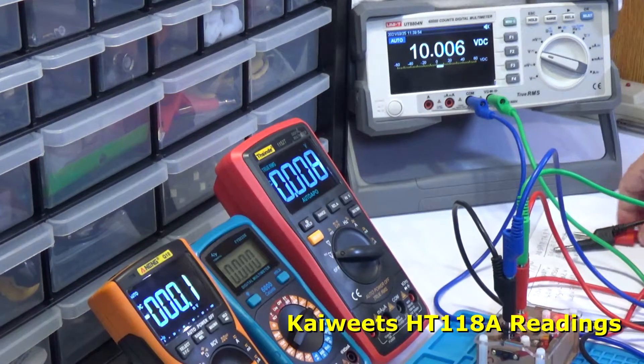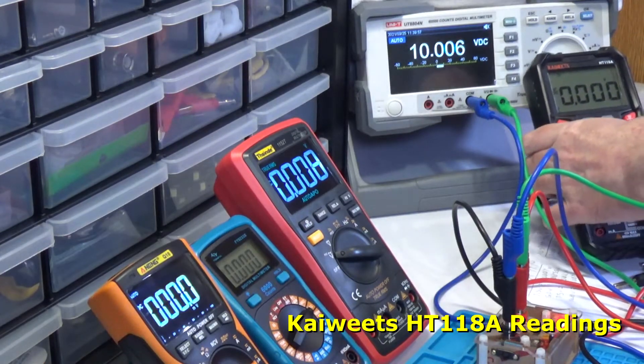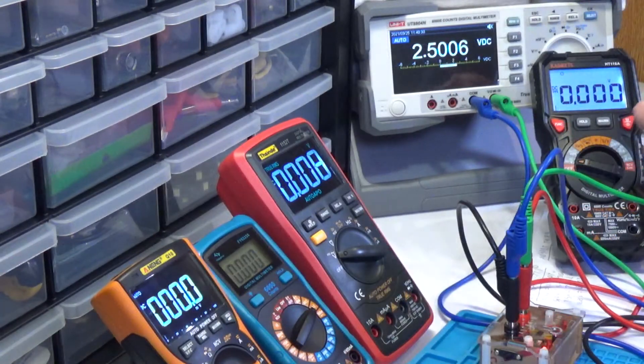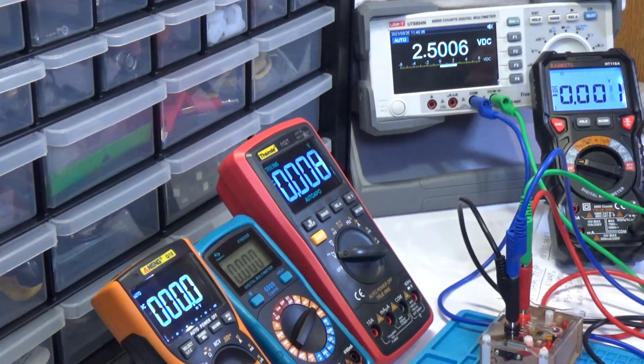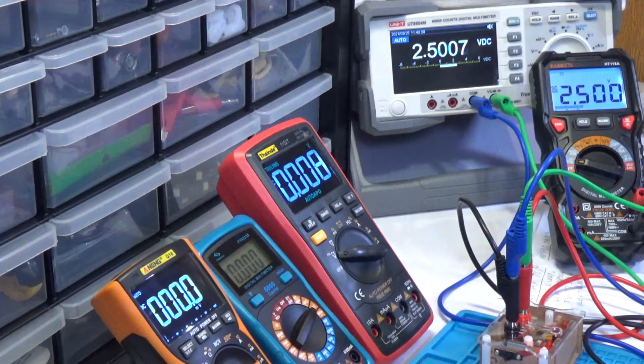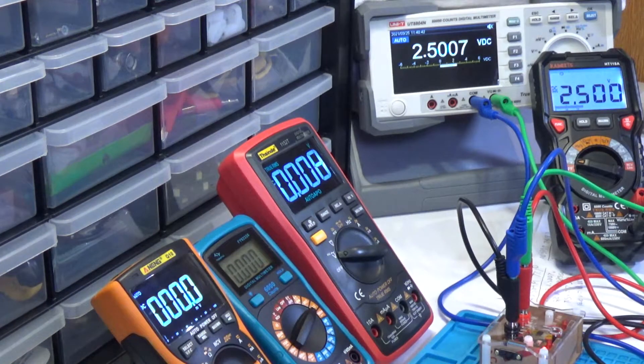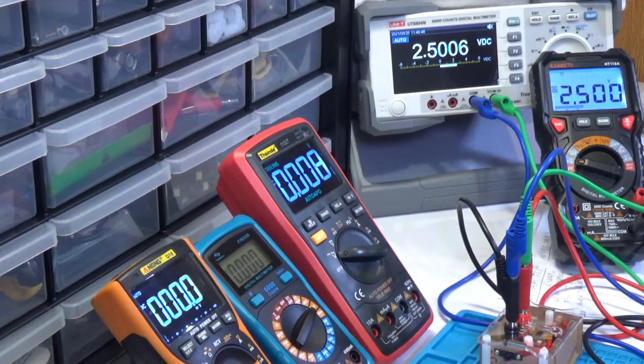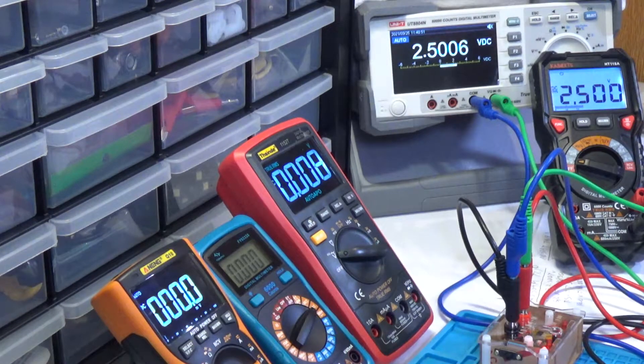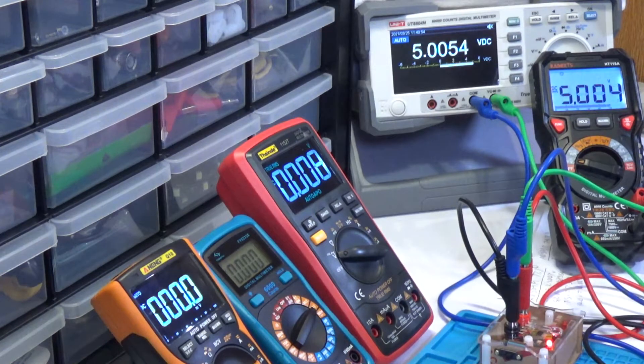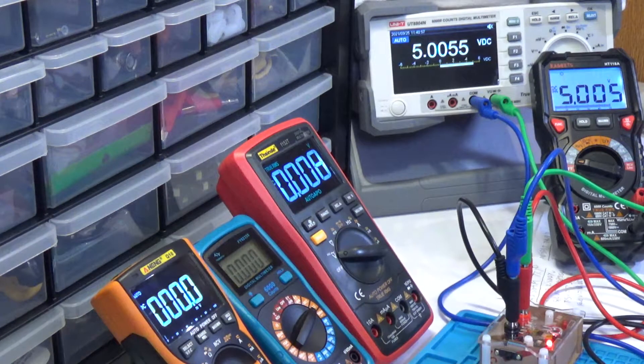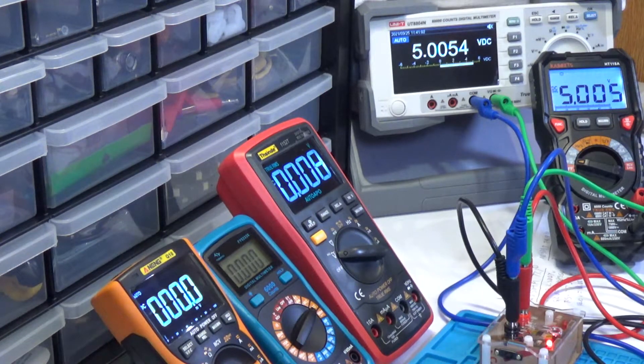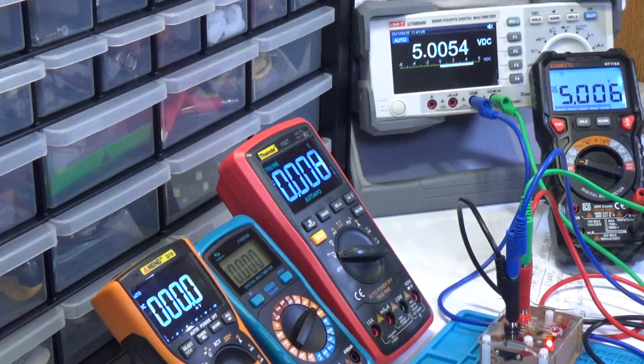Next up is the Coites HT118A. So for the HT118A, reading 2.500 volts. It is coming in slightly under, it should be reading 2.501. That's okay. On the 5 volt setting we are getting 5.005. And as you can see there, it is occasionally going up to 5.006. So that's actually pretty good, pretty darn close.